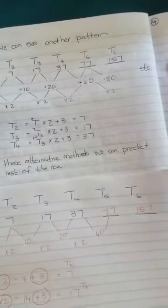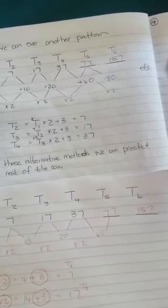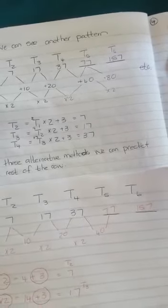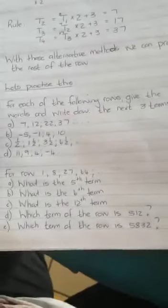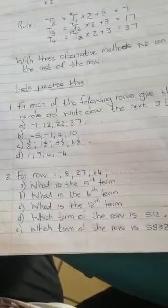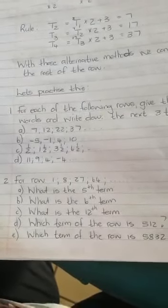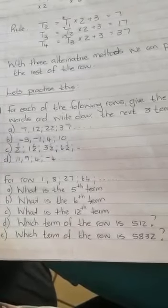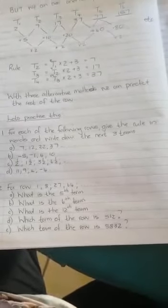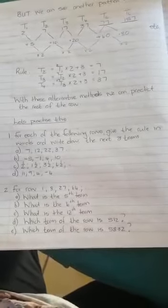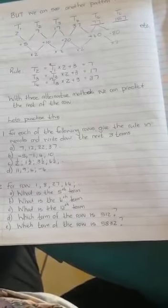So if we look a bit further, then this alternative method can assist you to predict the rest of the row. We have to practice this. So there's your practice exercise, number one and number two. Find each of the following rows and then you have to give the rule. You have to write down the rule and the next three terms. And then for that specific row number two, you have to answer all those questions.